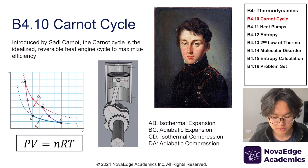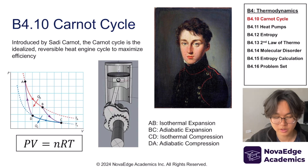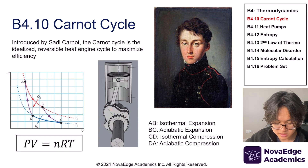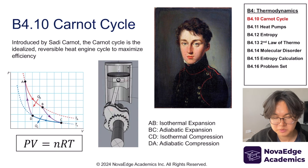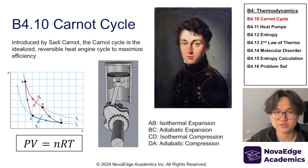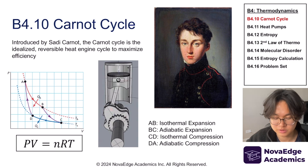First, we're going to cover something called the Carnot cycle. The Carnot cycle is the idealized heat engine cycle that maximizes efficiency. To give some context, steam engines used on trains were only about three percent efficient, whereas cars nowadays have around thirty percent efficiency in internal combustion engines — a very drastic improvement.